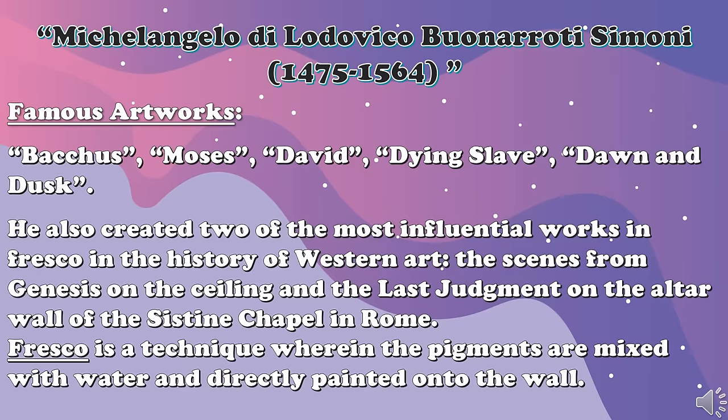Michelangelo created Bacchus, Moses, David, Dying Slave, Dawn, and Dusk. He also created two of the most influential works in fresco in the history of Western art: the scenes from Genesis on the ceiling and the Last Judgment on the altar wall of the Sistine Chapel in Rome. Fresco is a technique wherein the pigments are mixed with water and directly painted onto the wall.